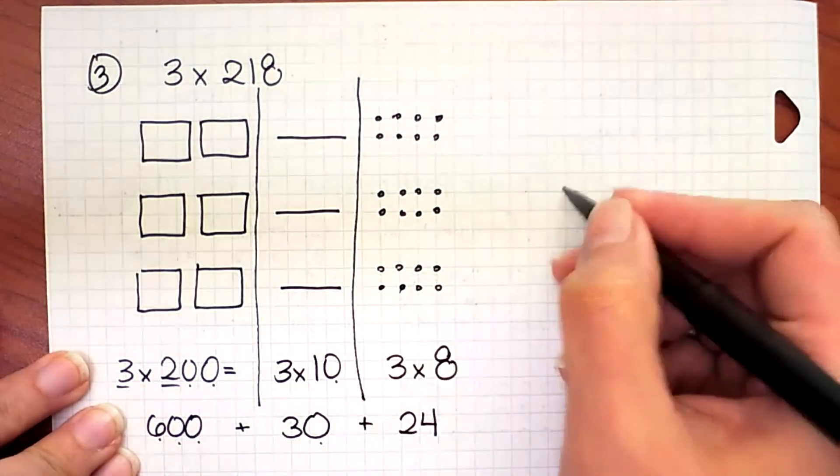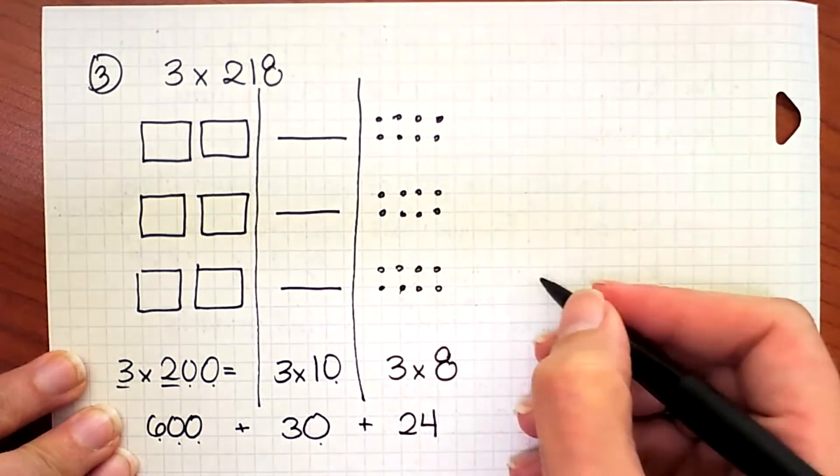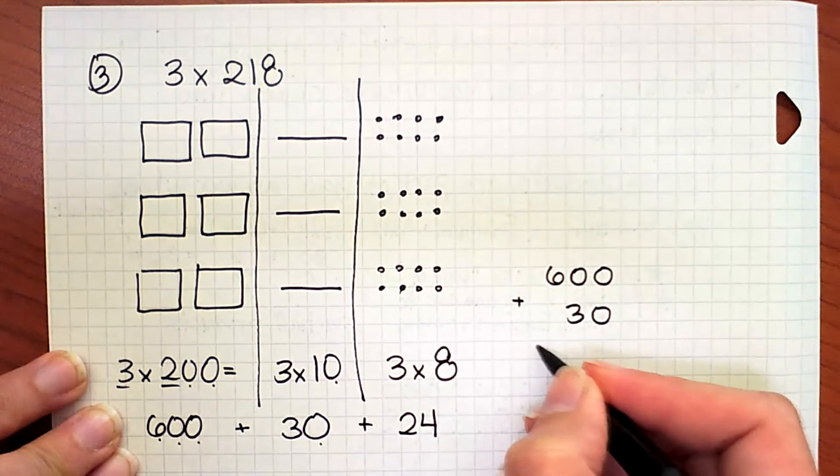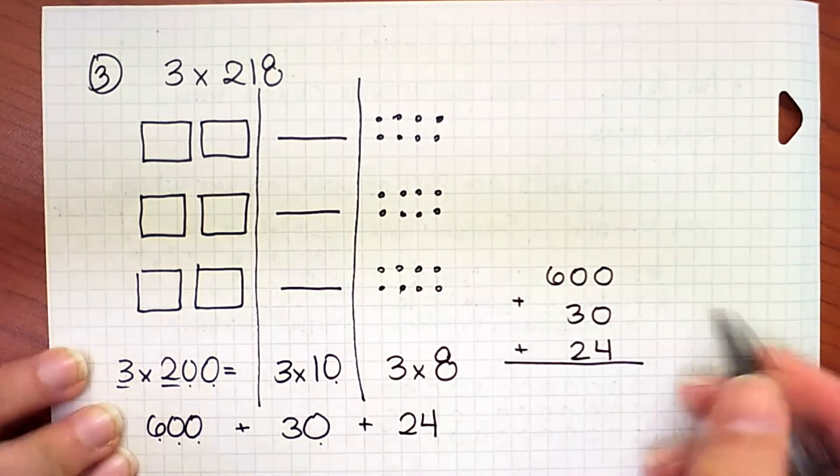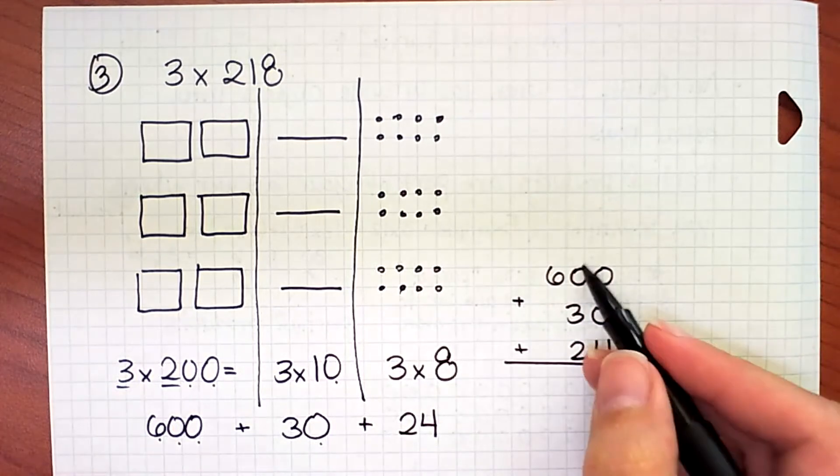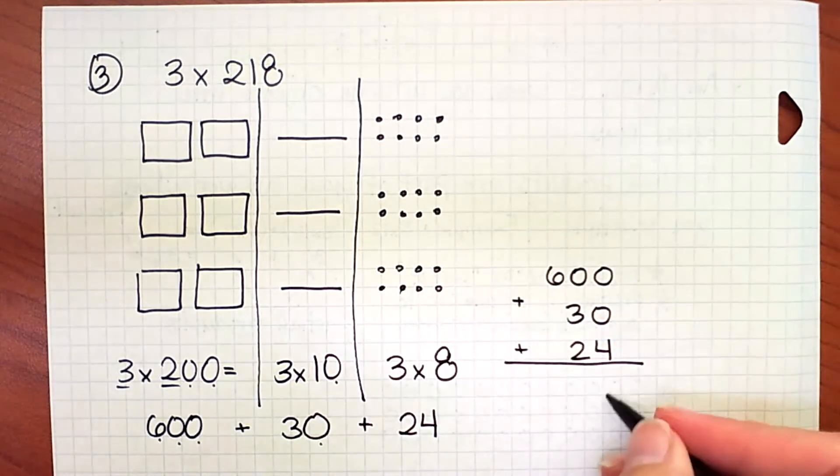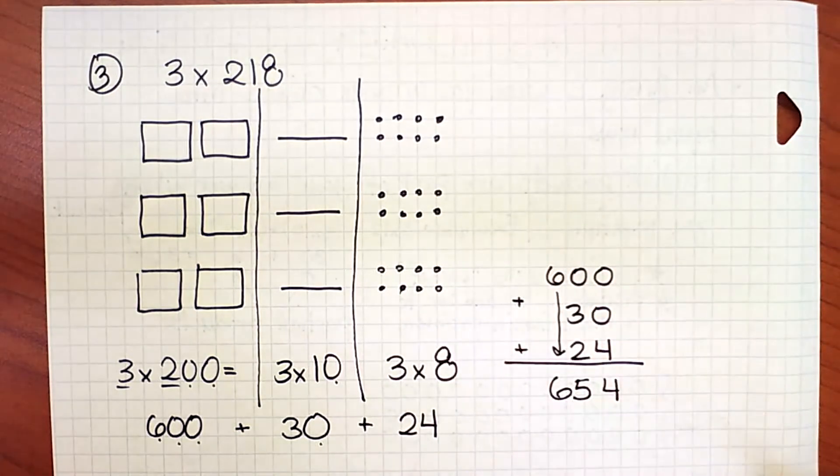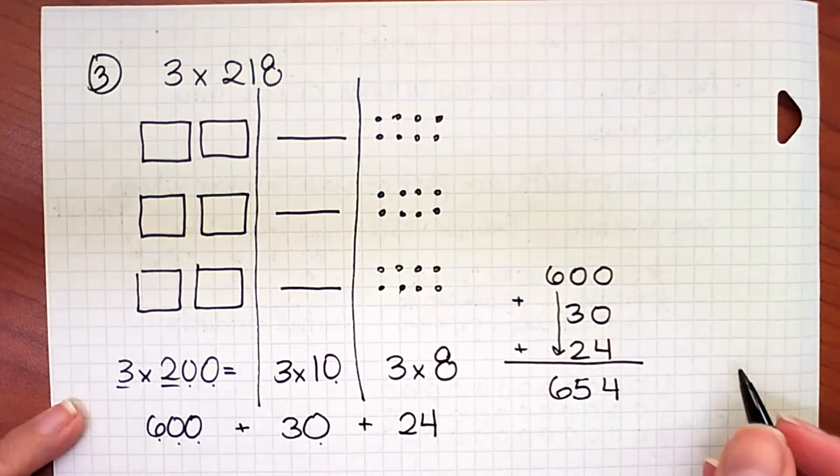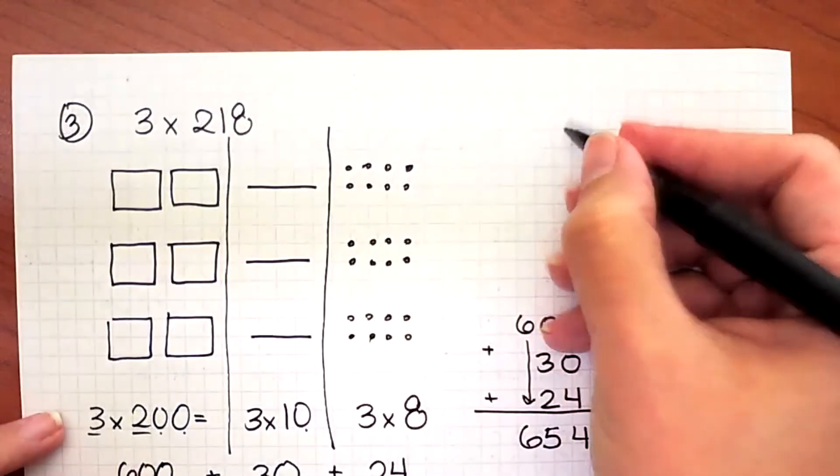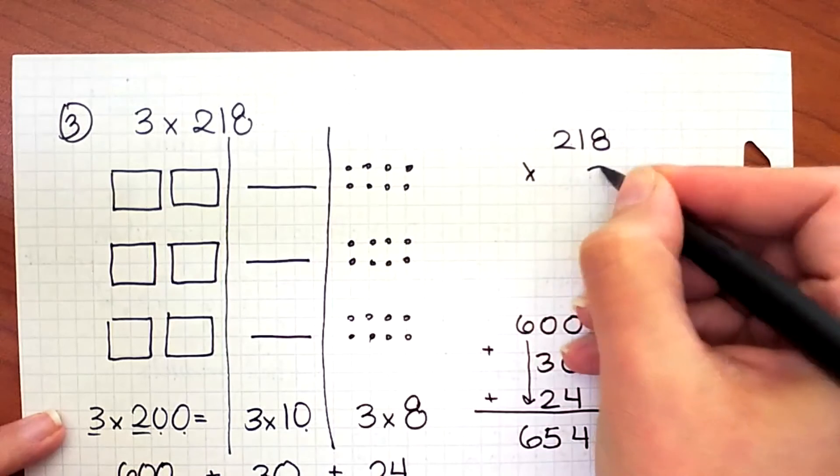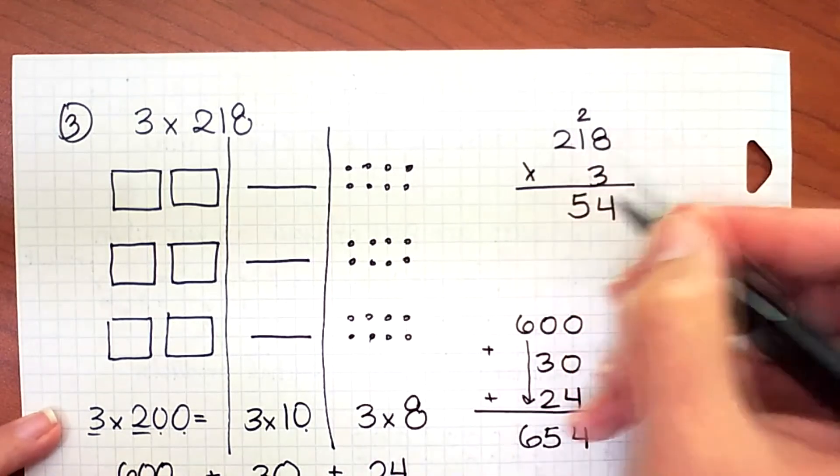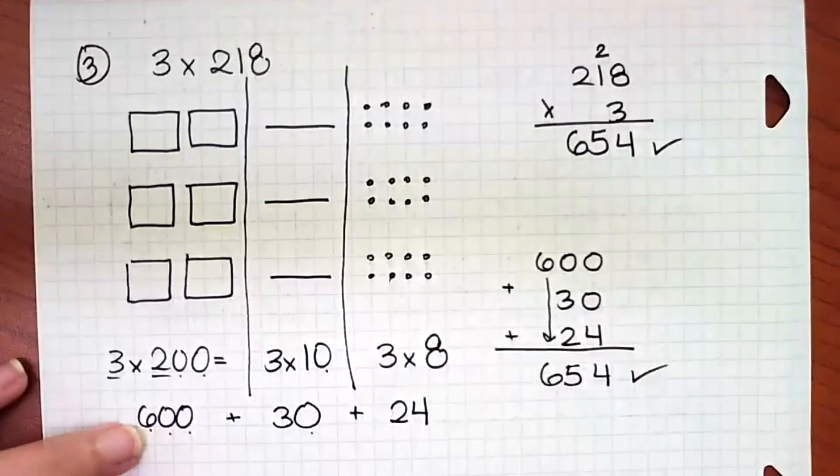Now what we need to do is add our partial products. I'm going to stack and add them. I'm going to do 600 plus 30 plus 24. Stack in place value order always - ones on top of ones, tens on top of tens, hundreds on top of hundreds. Zero plus zero plus four is four. Zero plus three plus two is five. And then the six, we're going to just drop it down as is. Now I can also stack and multiply the regular way. 218 times 3. Eight times three is 24, put the four, carry the two. Three times one is three, plus two is five. Three times two is six. My answers match. They are the same.